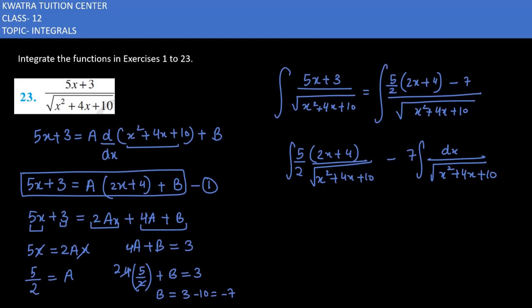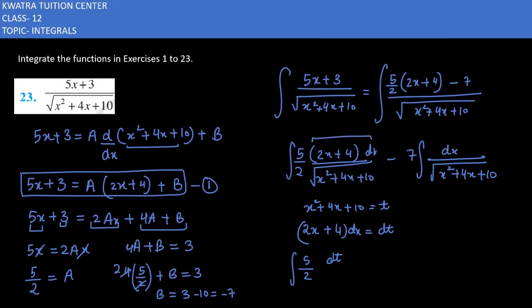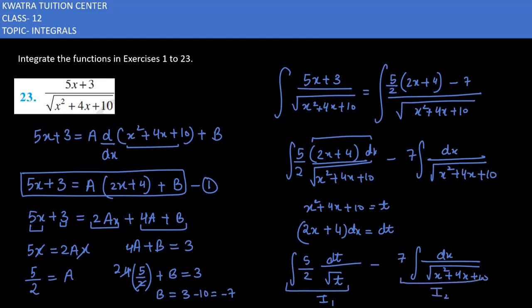For the first part (I1), हम x² + 4x + 10 को t let करते हैं। So x² + 4x + 10 = t, and differentiating both sides gives (2x + 4)dx = dt. We label the first part as I1 and the second as I2, and will find each separately.